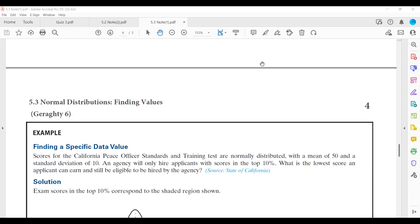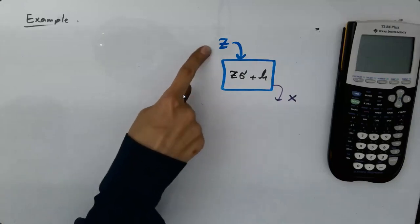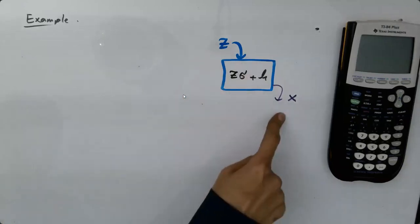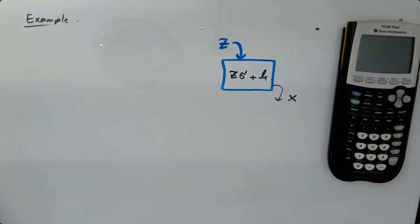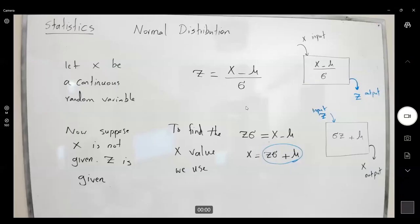If we go back to the board, if we take a look at our board, it says if you have your z, you can find your x-value. If you look at the larger board, if you have your z, then you can find your x-value. You can enter your z to this formula sigma times z plus mu and find your x-value. But here we don't have the value for z. What do we have? We have the top 10.